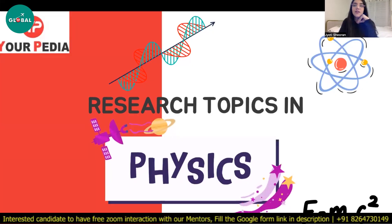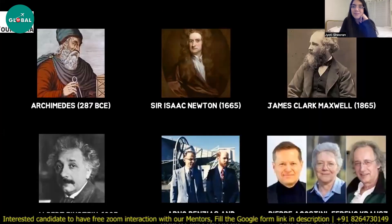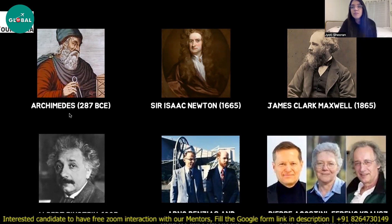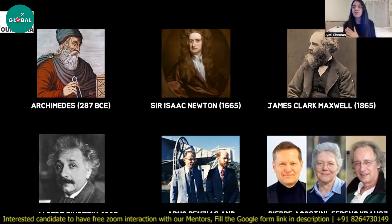Let us start and discuss the important research areas. This slide shows the evolution of research topics in the field of physics. Research in physics started from 287 BCE when Archimedes gave us the principles of how ships work, then more research was in classical mechanics when Sir Isaac Newton gave us the laws of motion, and then James Clerk Maxwell gave us, in 1865, four equations — Maxwell's equations — which govern electricity and magnetism.